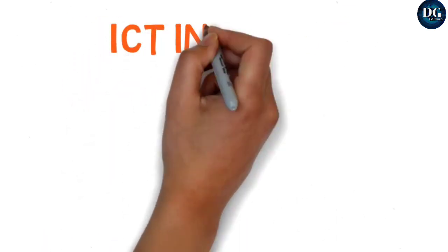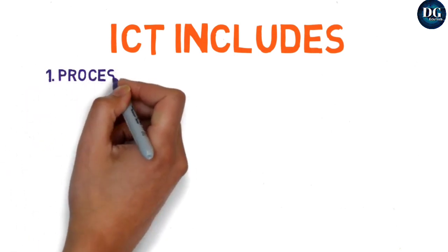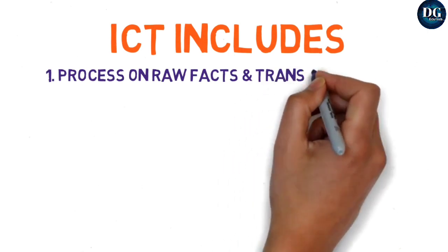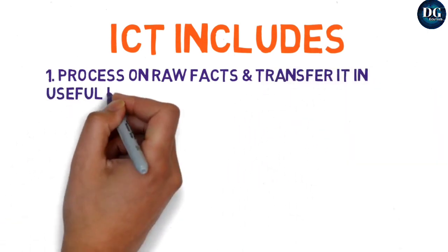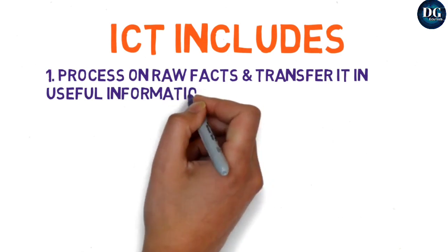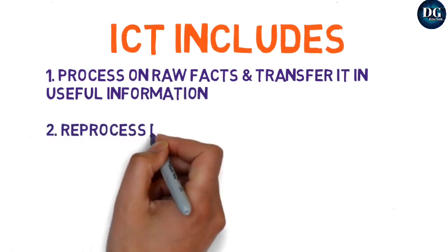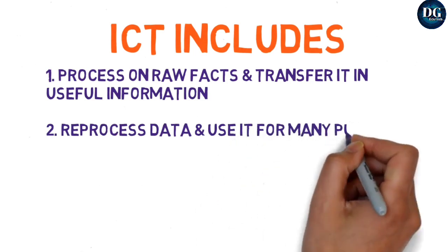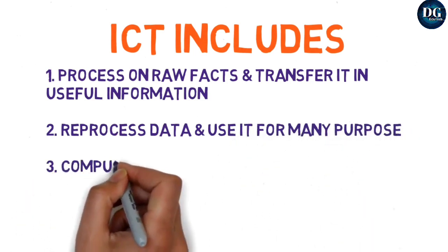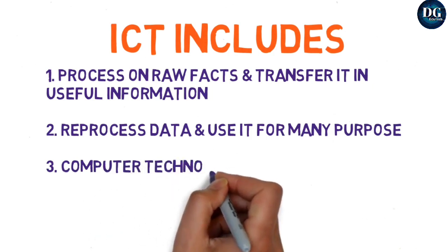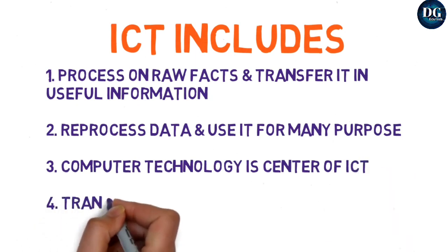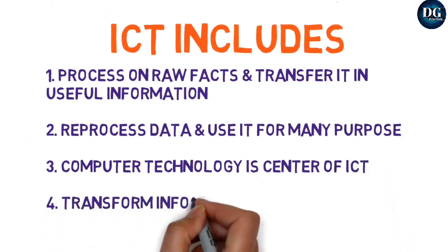ICT includes several things. First, it includes processing raw facts and transferring them into useful information. Second, it includes reprocessing data for use in other firms or for other purposes. Third, computer technology plays a major central role in ICT. ICT also plays a very good role in transformation and learning.